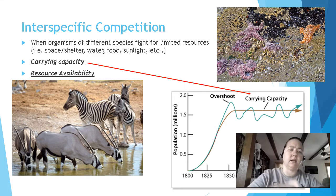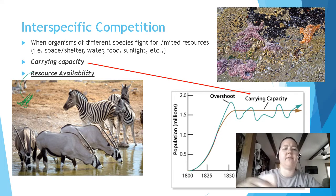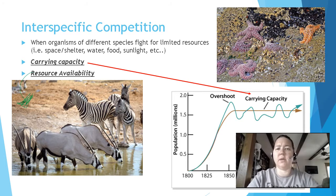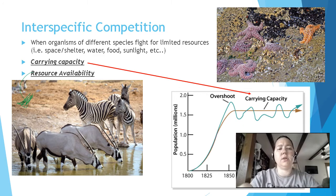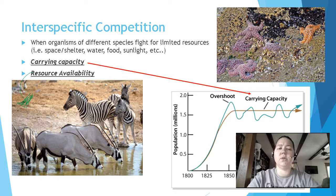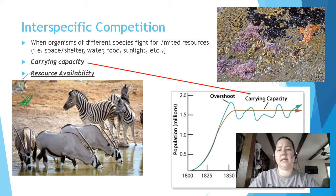Looking at this picture of the African savannah, all of these organisms — the zebras, the antelopes — they all need clean fresh water. In drier seasons, that water becomes more limited because it's been dry, so not every organism is going to be able to drink the same amount. They start fighting for it, or whoever gets there first. Resource availability creates that carrying capacity, and then the organisms compete.